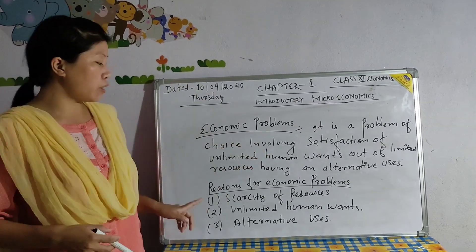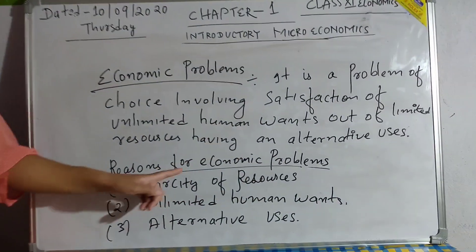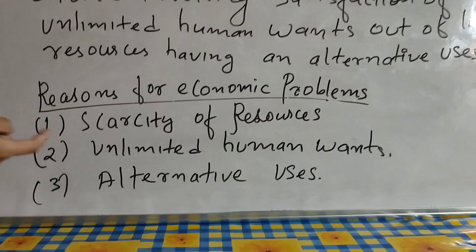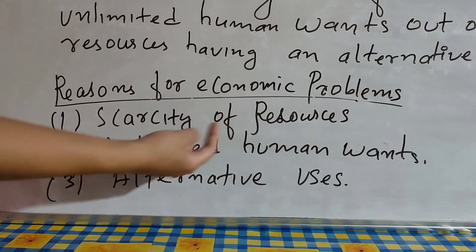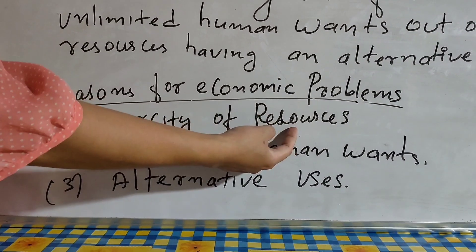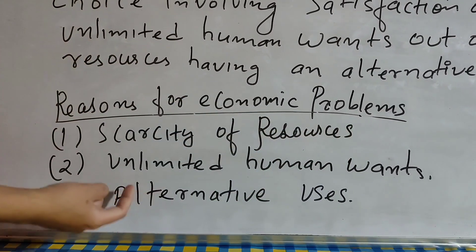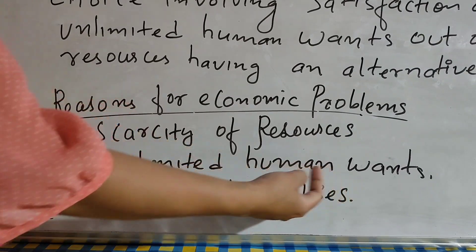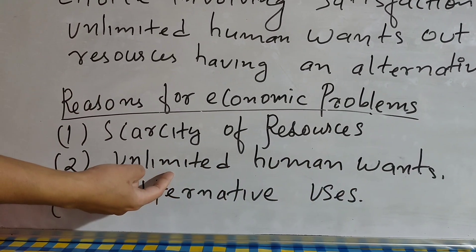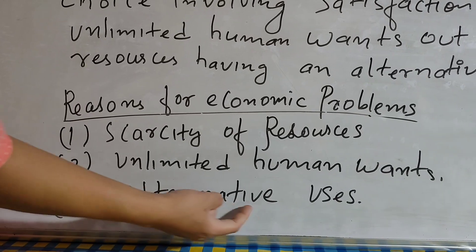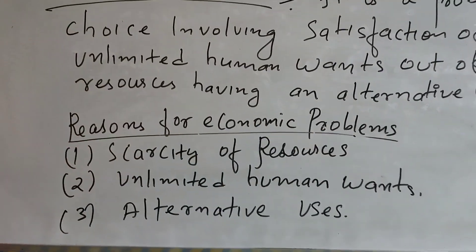This is economic problem — this is very important. Now, come to the reasons for economic problems. The first one is scarcity of resources — resources are always scarce, meaning always limited in nature. And there are unlimited human wants. The third reason is alternative uses. So these are the reasons for economic problems.